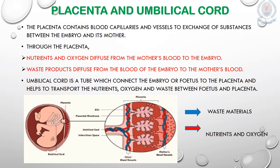Waste products such as carbon dioxide can also diffuse from the blood of the embryo to its mother's blood. As the embryo grows, it separates from the placenta. A tube known as the umbilical cord connects the embryo or fetus to the placenta. The umbilical cord contains the blood vessels of the embryo or fetus and helps transport nutrients and oxygen from the placenta to the fetus, as well as waste from the fetus to the placenta.